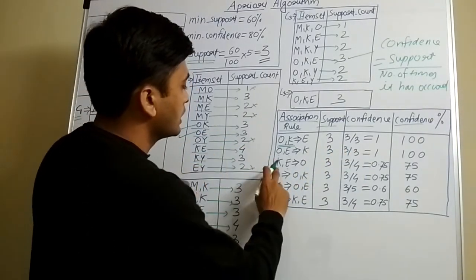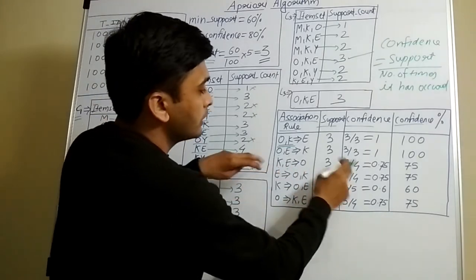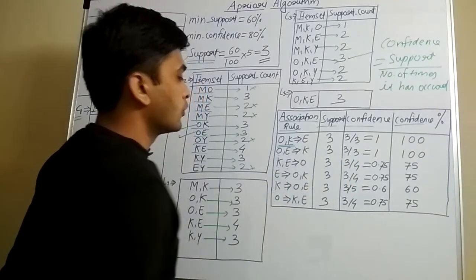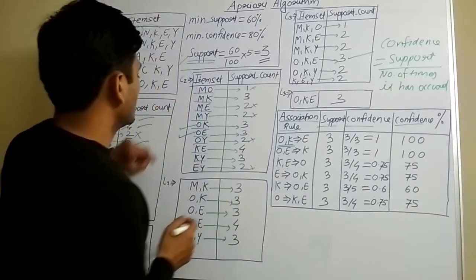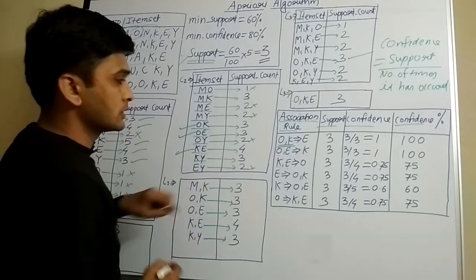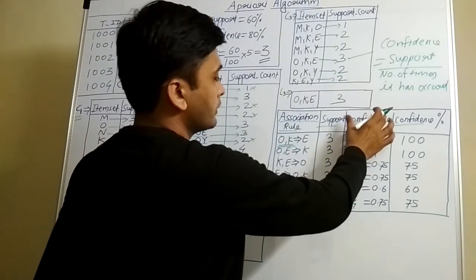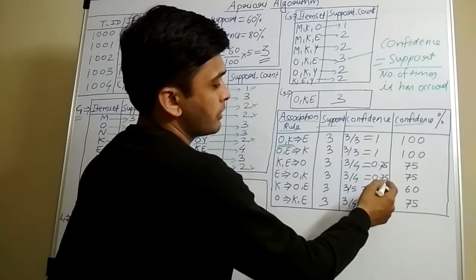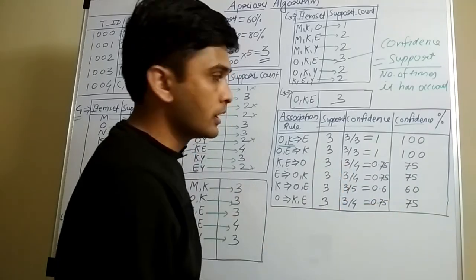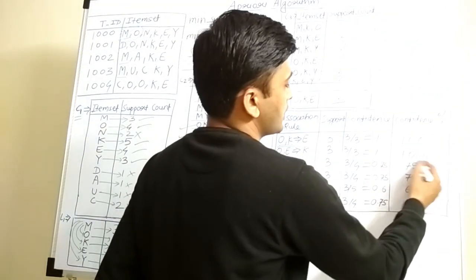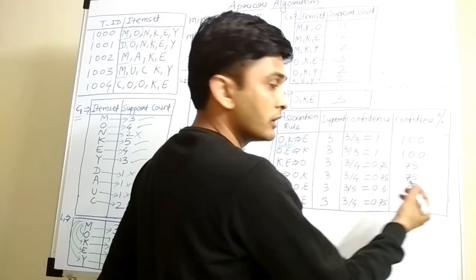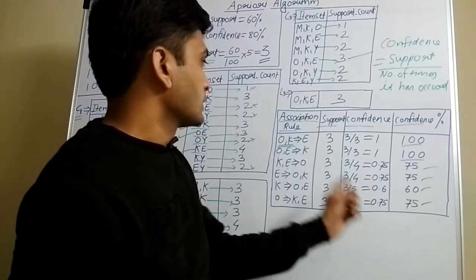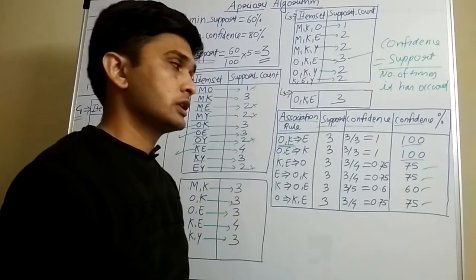For KE→O: support is 3 divided by the number of times KE has occurred. KE has occurred 4 times, so confidence = 3/4 = 0.75. Like this, we calculate the confidence for all other rules. The confidence values we got are: 1, 1, 0.75, 0.75, 0.6, 0.75 — which in percentages are 100%, 100%, 75%, 75%, 60%, 75%.